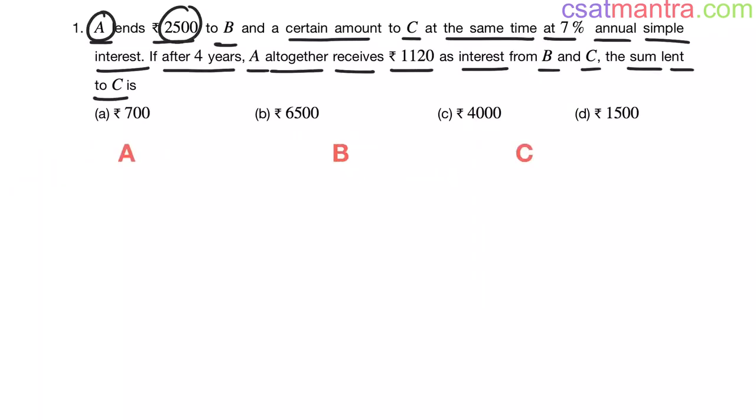Now, A lends 2500 to B, and a certain amount to C. We do not know that. Let's assume it as X. Here, A lent these amounts to B and C at the same time at 7% annual simple interest.